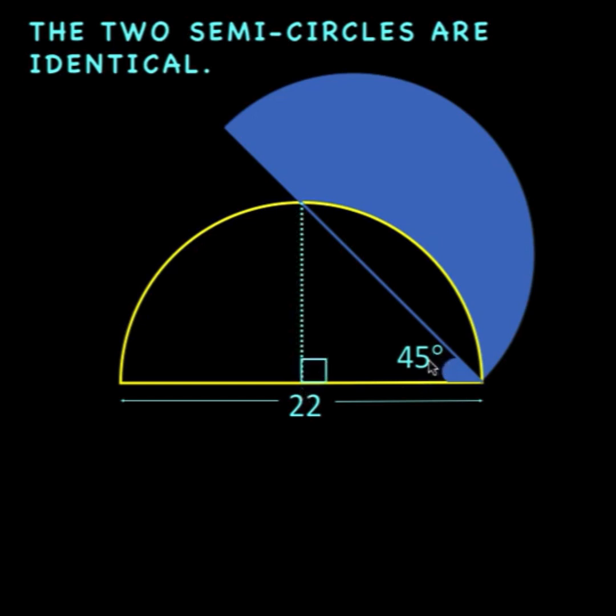Since we know that the angle here is 45 degrees and the angle here is 90 degrees, it follows that the remaining angle of this triangle is 45 degrees.